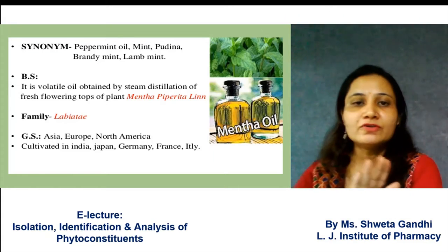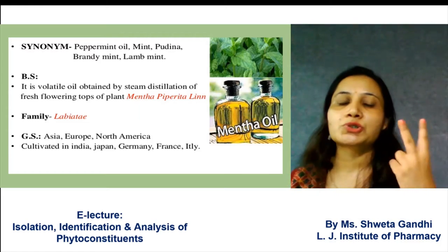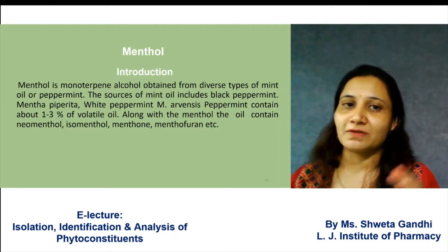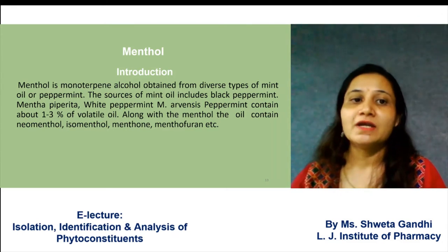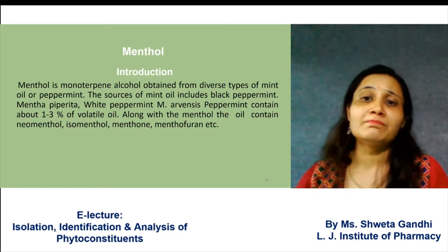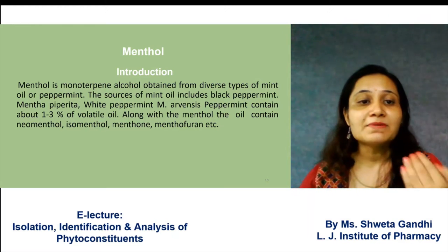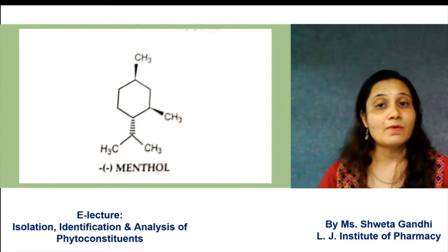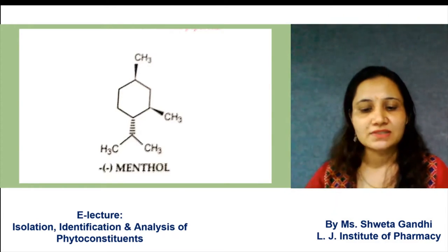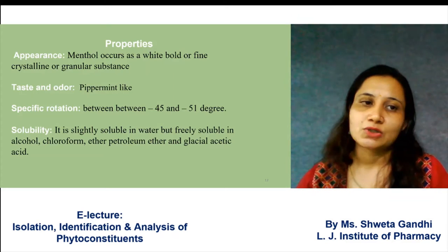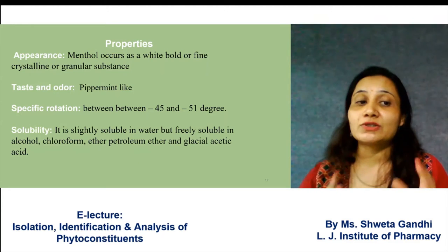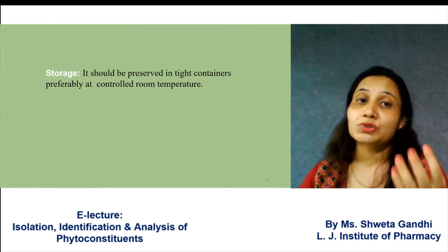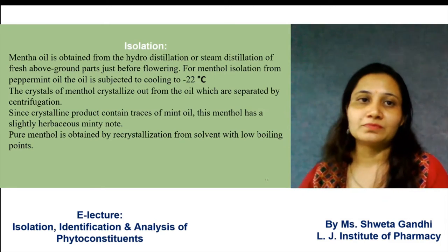The first terpenoid drug is menthol. It is obtained by steam distillation of Mentha piperita. There are two categories: black peppermint obtained from Mentha piperita, and white peppermint obtained from Mentha arvensis. The major chemical constituents are neomenthol, isomenthol, menthol, and menthofuran. The structure of menthol has a methyl group attached. Properties include appearance, taste, odor, optical rotation, and solubility. Being a volatile oil, menthol evaporates at room temperature and should be stored in a tight container.